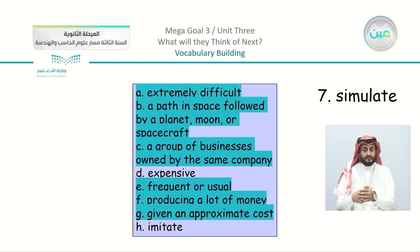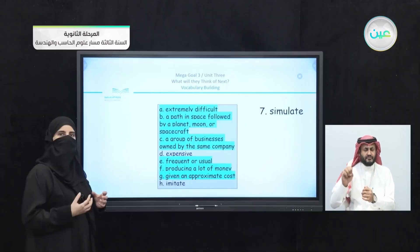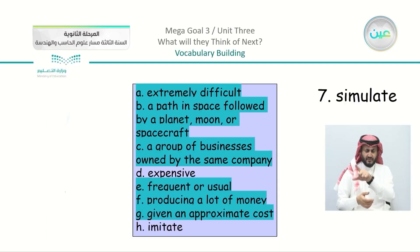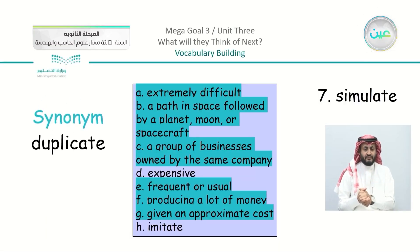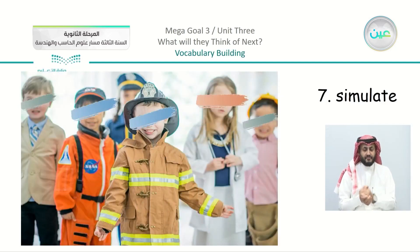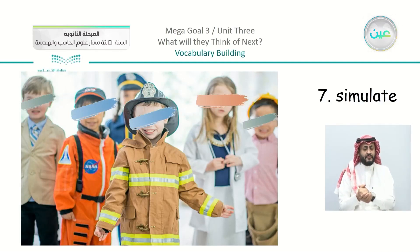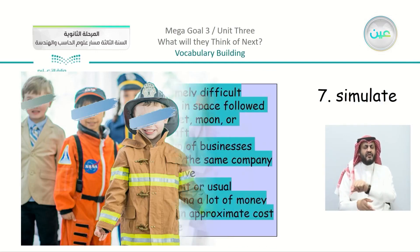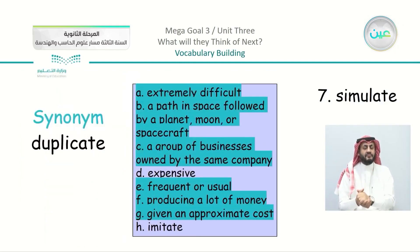We have the seventh word: 'simulate.' From the pronunciation, you can connect it with one of the remaining meanings. Its synonym is 'duplicate.' What is the meaning of duplicate, simulate, or imitate? You can see children dressed up as characters — a fireman, a doctor, an engineer. Are they truly these occupations, or are they just simulating or imitating? So we can connect simulate and imitate.